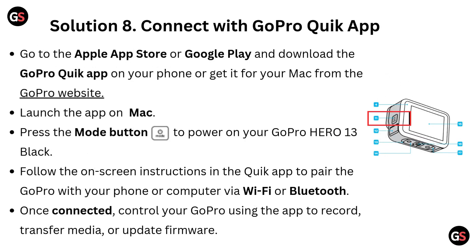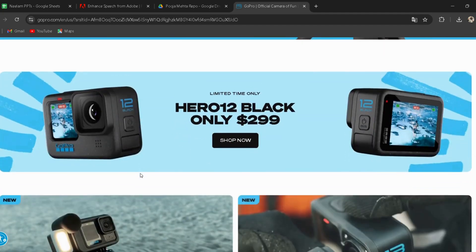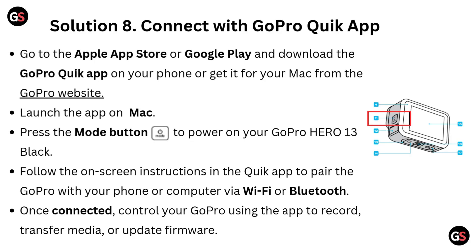Solution 8: Connect with the GoPro Quick App. Go to the Apple App Store or Google Play and download the GoPro Quick App on your phone, or get it for your Mac from the GoPro website — I have provided the link in the description. Launch the app on Mac. Press the mode button to power on your GoPro Hero 13 Black. Follow the on-screen instructions in the Quick App to pair the GoPro with your phone or computer via Wi-Fi or Bluetooth. Once connected, control your GoPro using the app to record, transfer media, or update firmware.